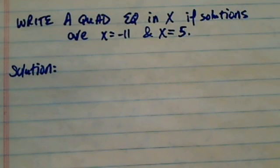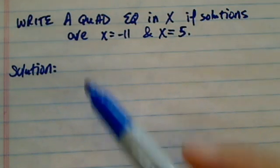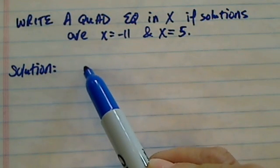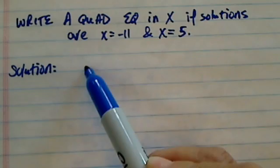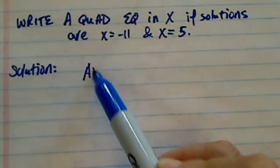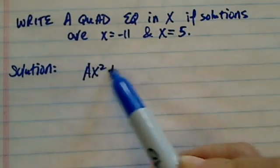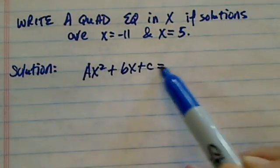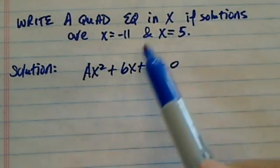We're asked to find a quadratic equation if the solutions are x equal to minus 11 and x equal to 5. This is the opposite of when we're looking for a quadratic equation in the form of ax squared plus bx plus c equal to 0.